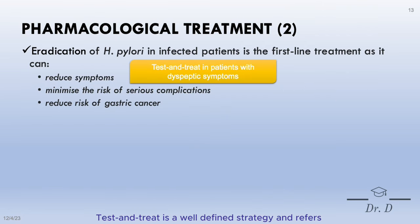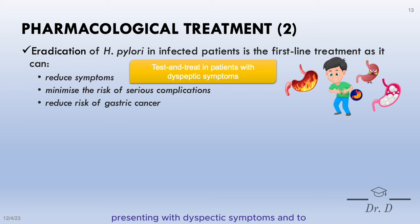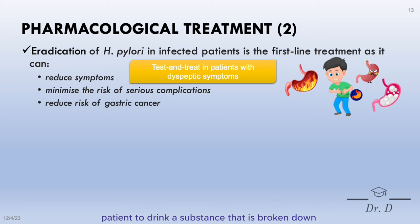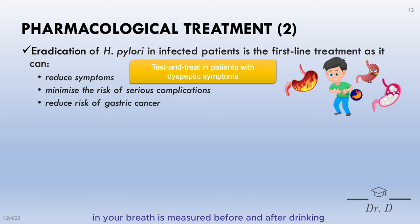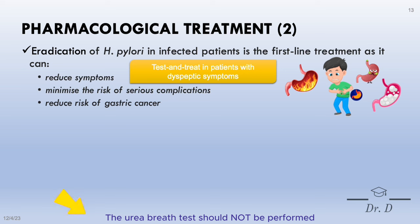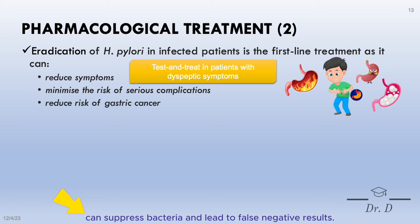Test and treat is a well-defined strategy referring to non-invasive testing for H. pylori in patients with dyspeptic symptoms and eradicating the infection whenever detected. The urea breath test, or UBT, is a common procedure to detect this bacteria. It requires the patient to drink a substance broken down by H. pylori to carbon dioxide. The amount of CO2 in the breath is measured before and after drinking the substance — if exhaled CO2 is increased, the patient is H. pylori positive. The UBT should not be performed within 2 weeks of PPI use or 4 weeks of antibiotic use, as this can suppress bacteria and lead to false negative results.